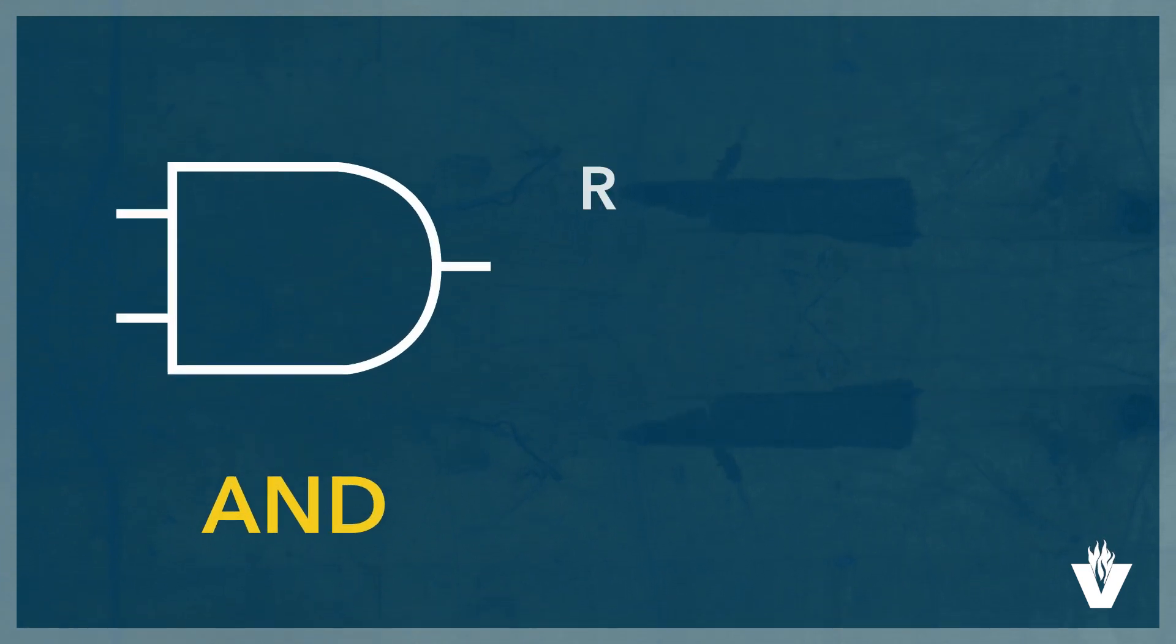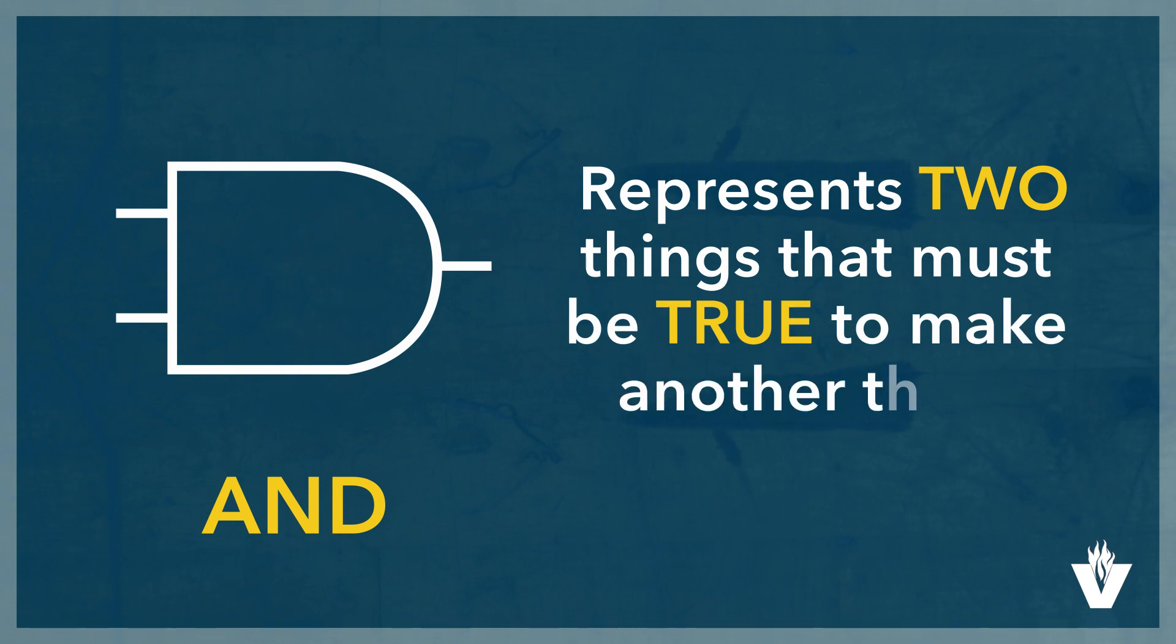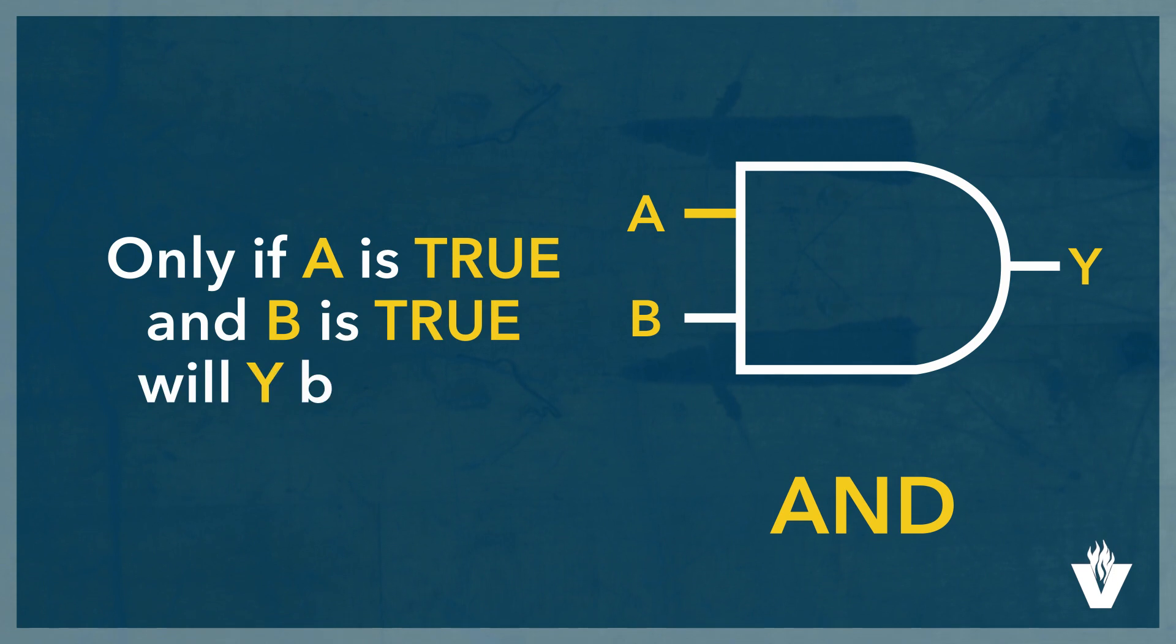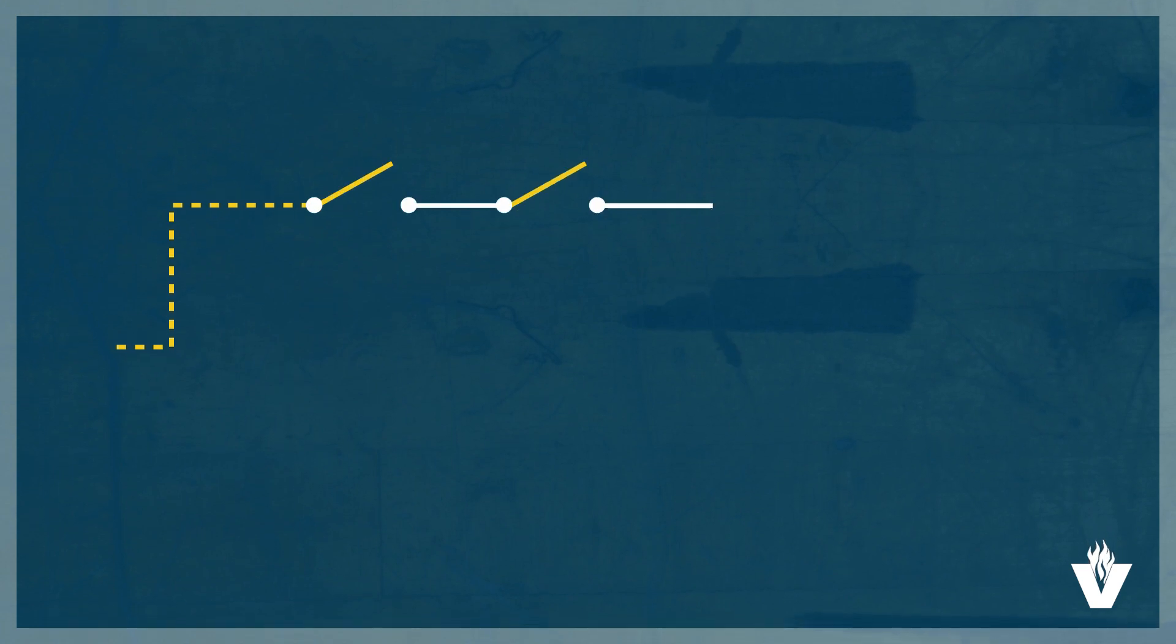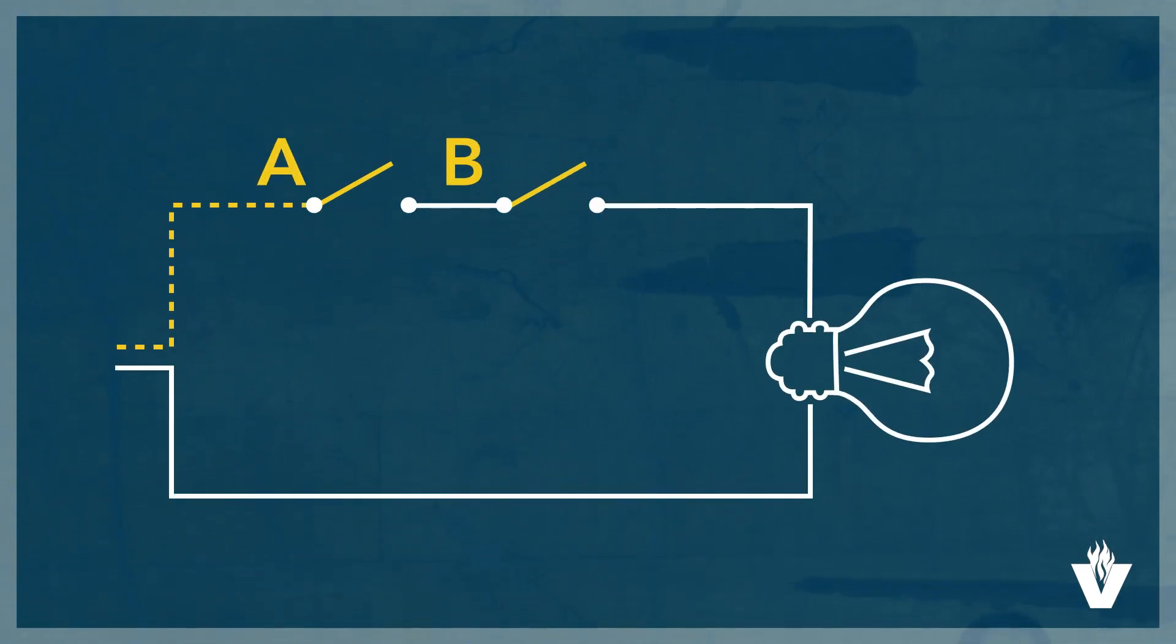The AND gate represents two things that must be true to make another thing true. Only if A is true and B is true, will Y be true. Another way to envision the gate is with a simple circuit consisting of two switches and a lamp in series. To make the lamp illuminate, we must close both switch A and switch B.